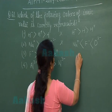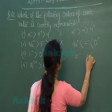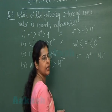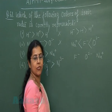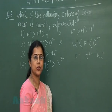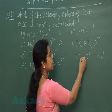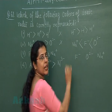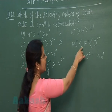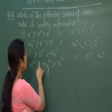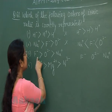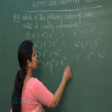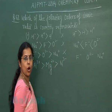In the third option, the same isoelectronic species are given: F⁻, O²⁻, and Na⁺. The actual correct order should be O²⁻ largest, then F⁻, then Na⁺ smallest. But in this option, it is stated that F⁻ is larger than O²⁻, which is incorrect. So this option is also incorrect.